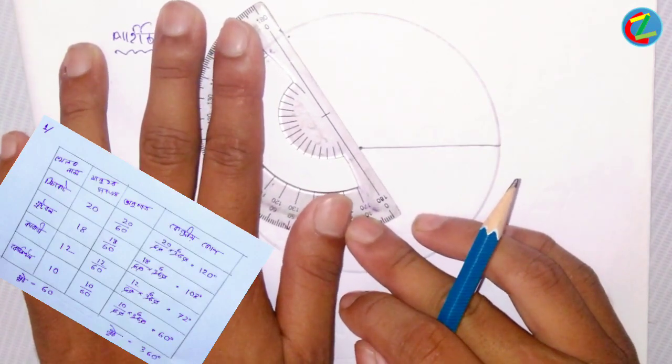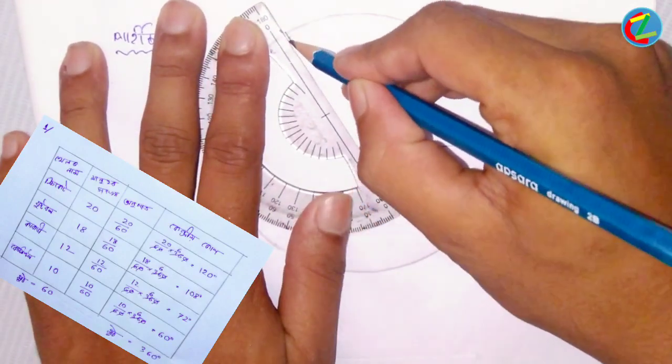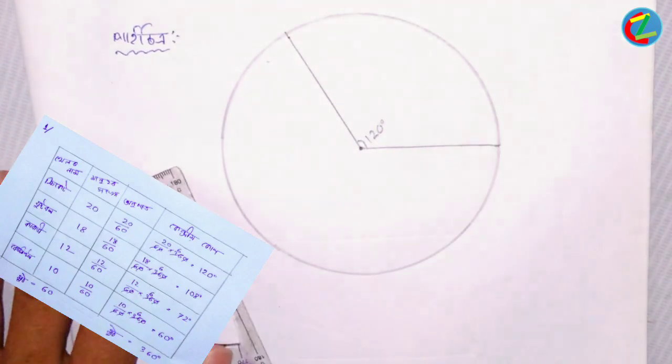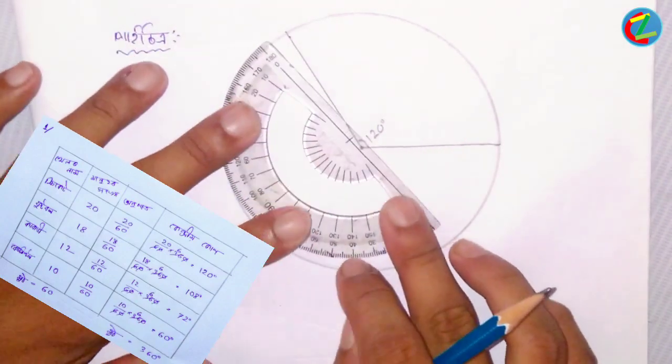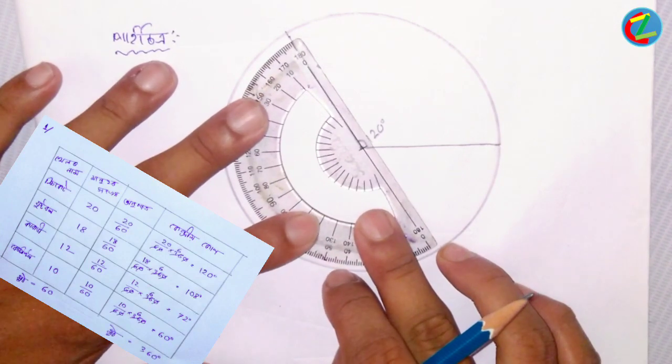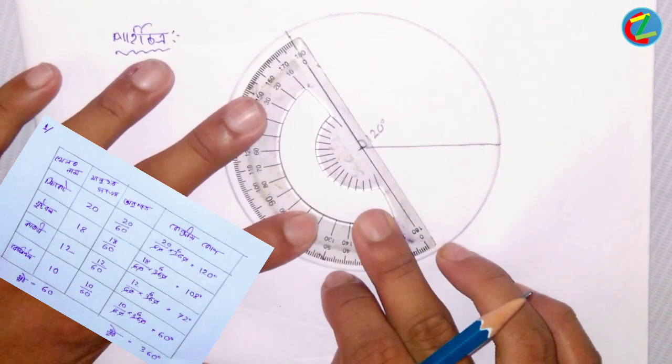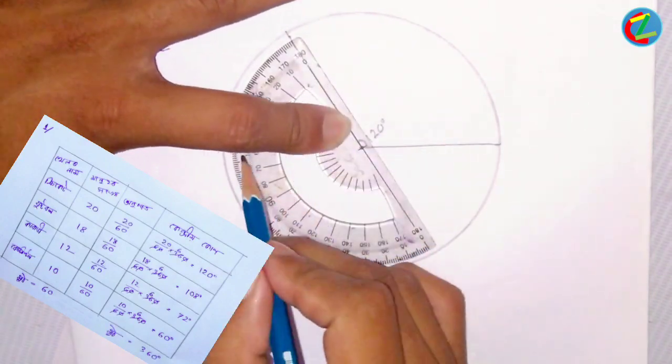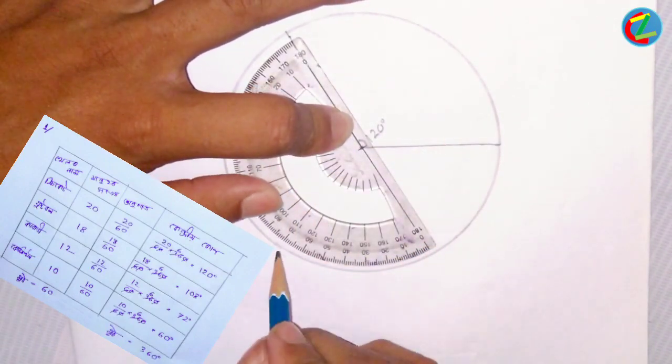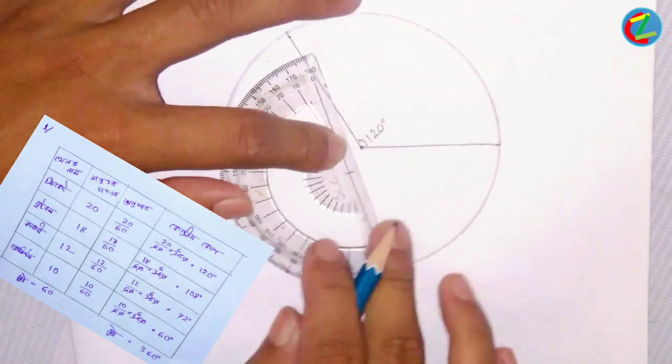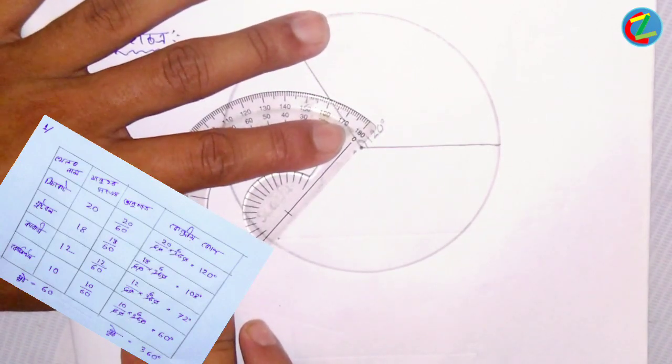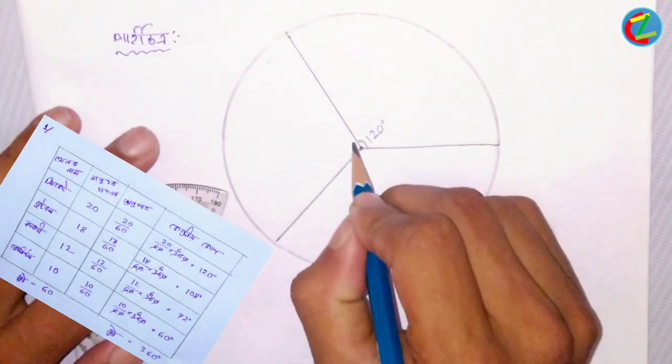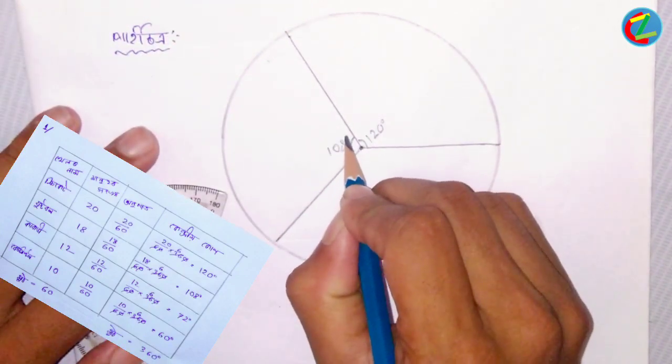I'm going to discuss creating a pie chart. We have data about cricket, football, and badminton. I'll show you how to convert this data into a pie chart. First, we need to calculate the degree for each category based on the data we collected.